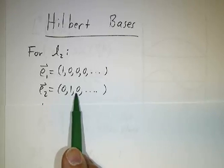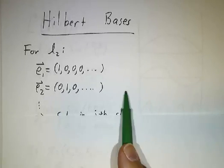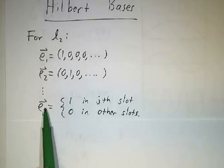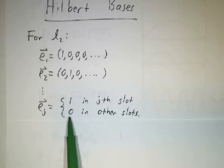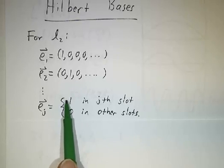And E2 is 0, 1, 0, 0, 0. And E3 is 0, 0, 1, 0, 0. And in general, Ej is going to be a sequence that has a 1 in the jth slot and a 0 in all the other slots. This is the analog of the unit vector pointing in the jth direction that we have in Rn.